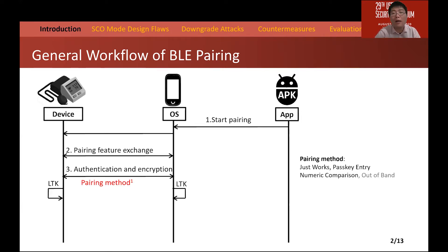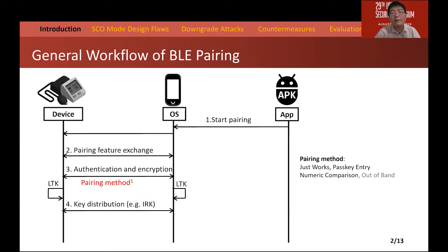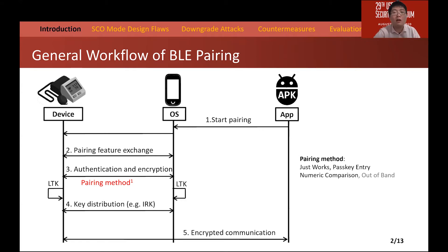Then, the mobile and the device determine a suitable pairing method based on the exchanged pairing features. There are four pairing methods available, including JustWorks, Passkey Entry, Numeric Comparison, and OOB. The two devices then start to distribute keys, such as the Identity Resolution Key, known as the IRK. The IRK can be used to uniquely identify the identities of the pairing devices. Finally, the two devices use the generated keys to encrypt the link and communicate with each other.